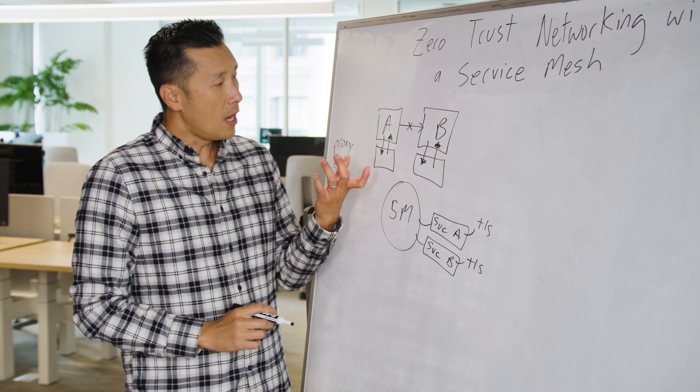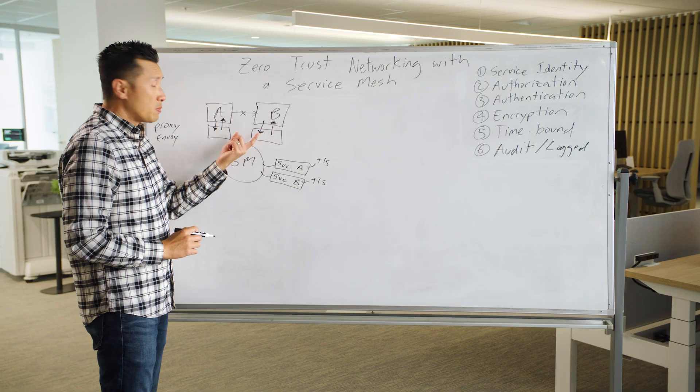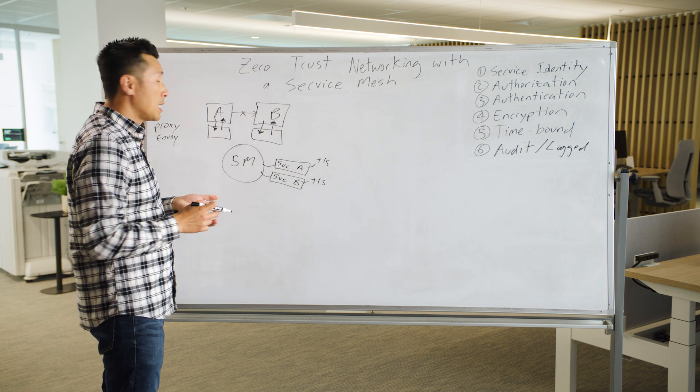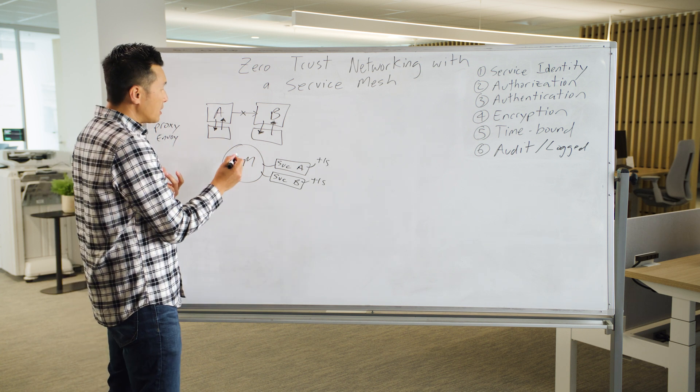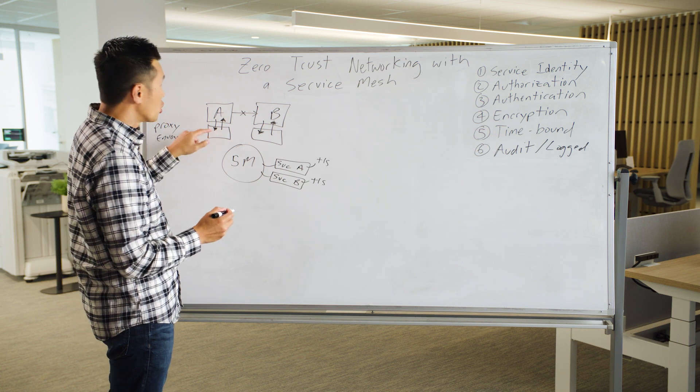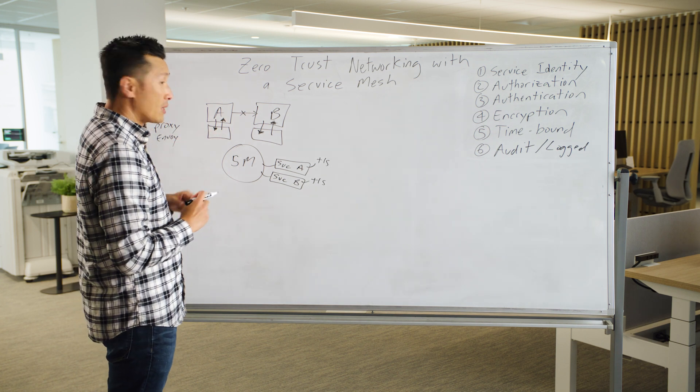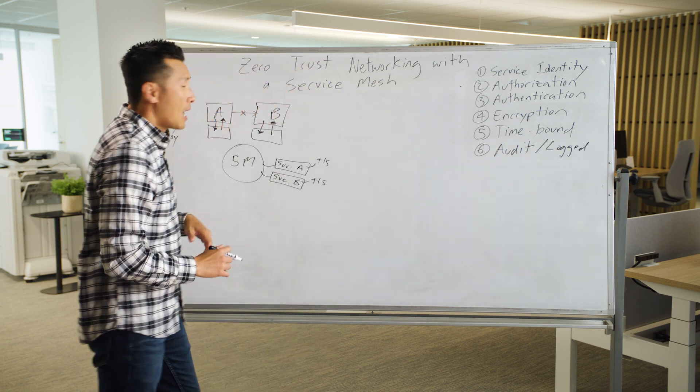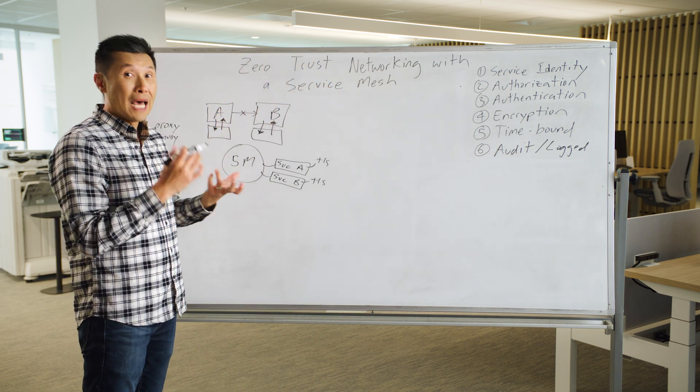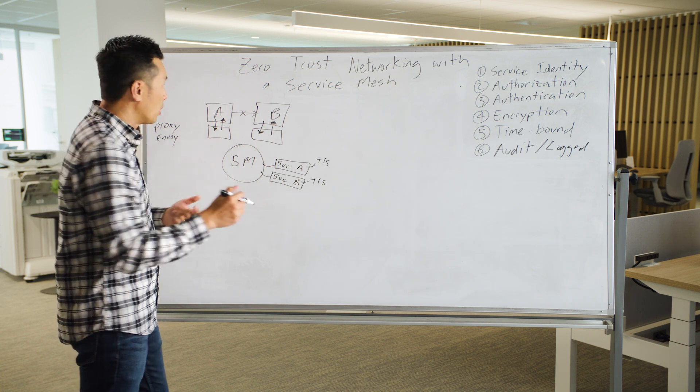Now that traffic is going through these proxies, it becomes an important piece in managing, shaping, and routing traffic between different services. There's a lot of control in these proxies. That leads us into the next point which is authorization - how to authorize or allow and deny services from one point to another point.